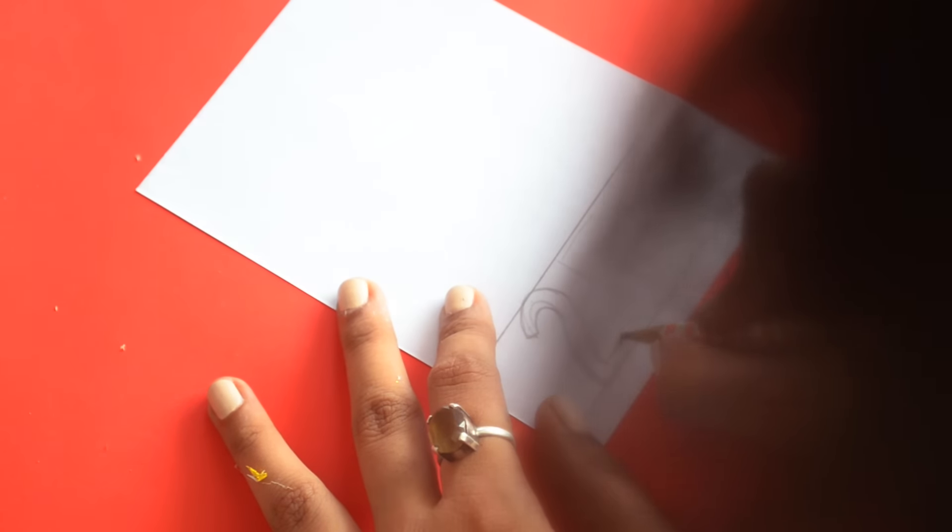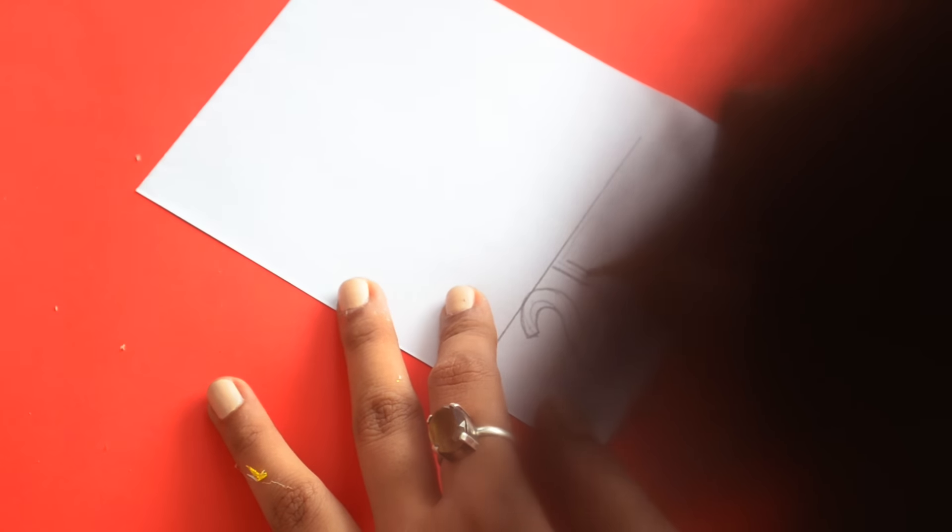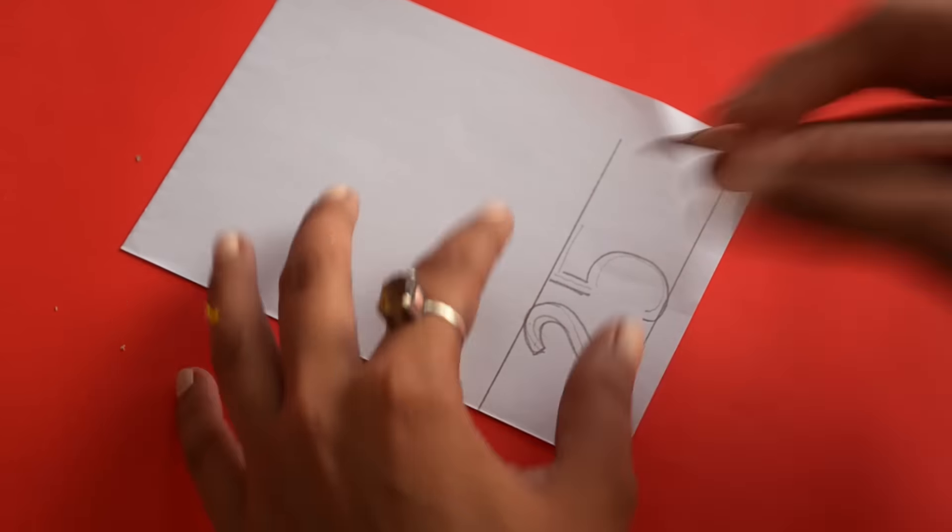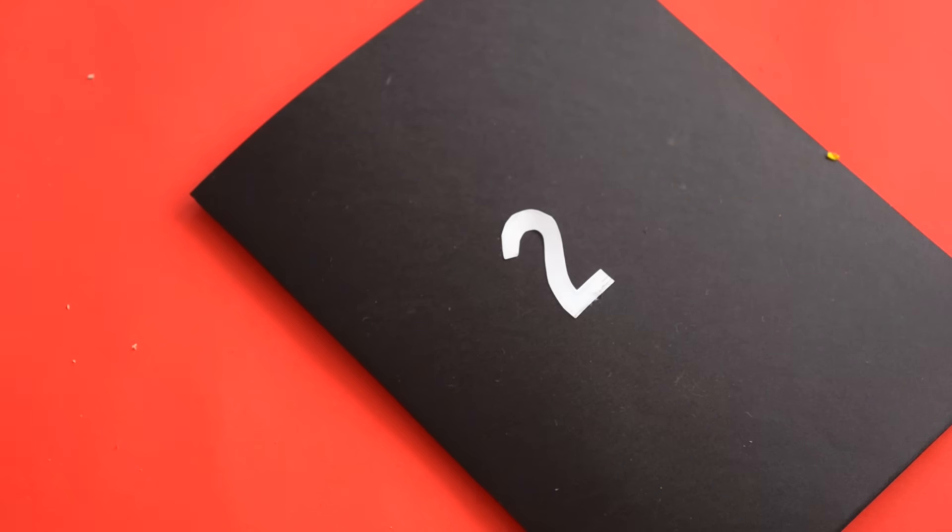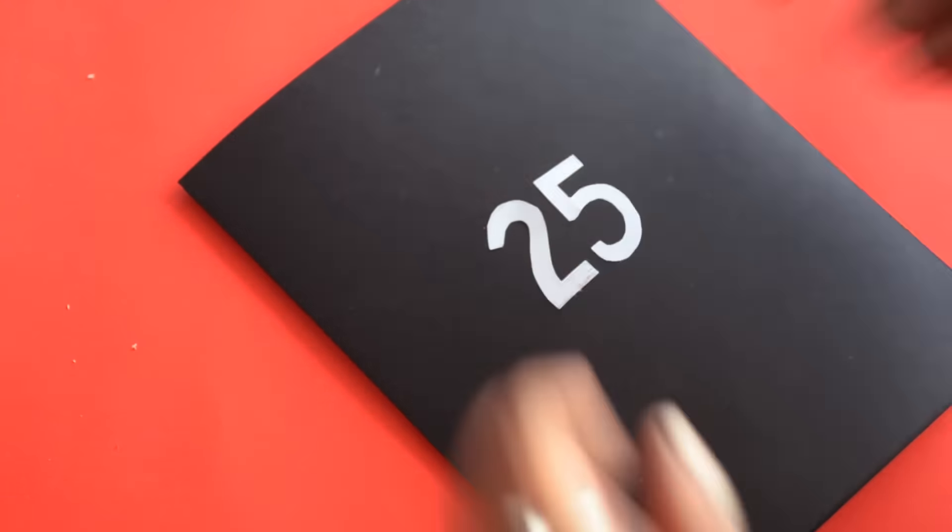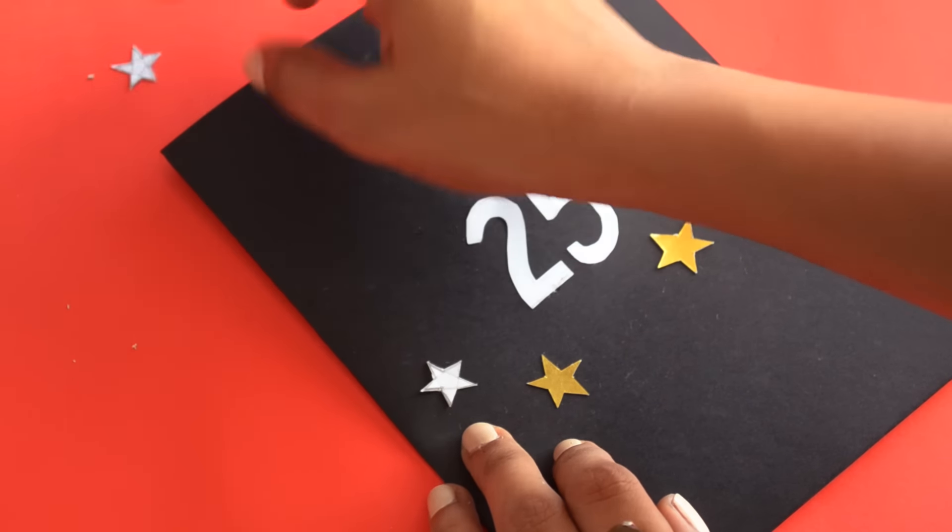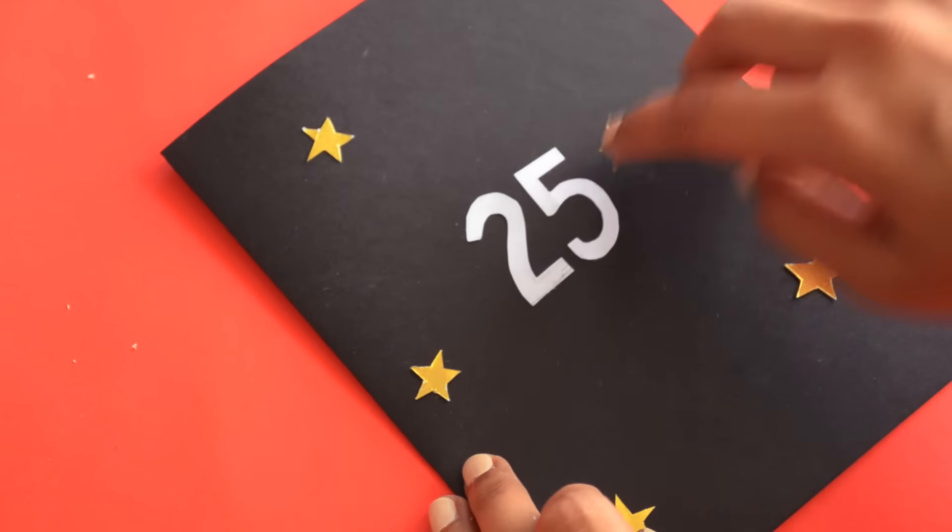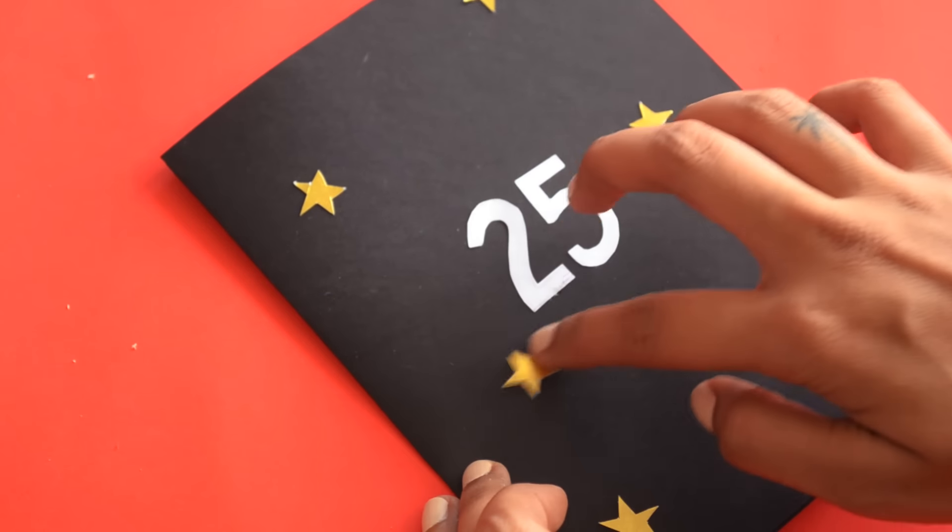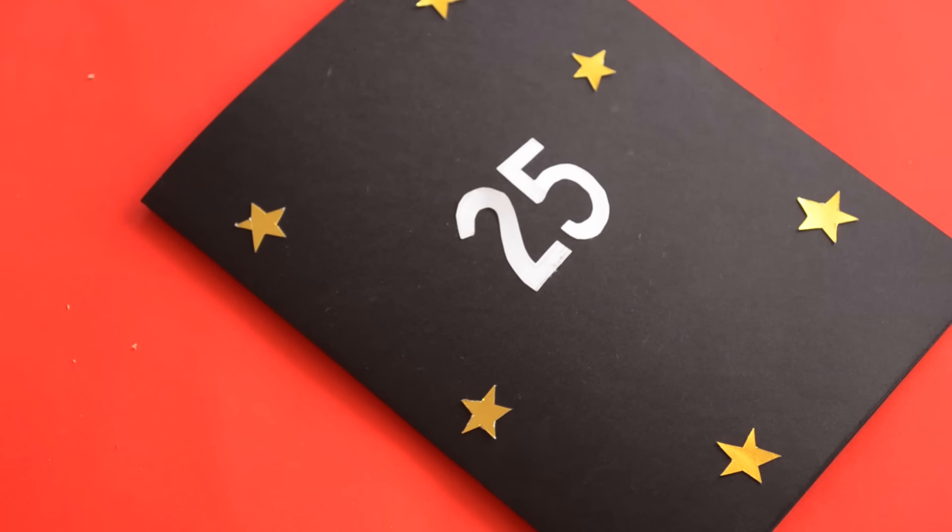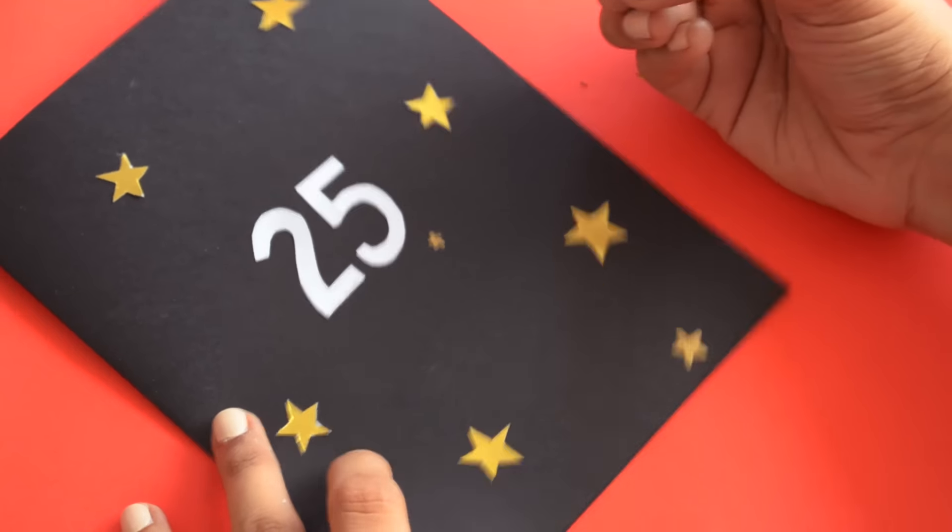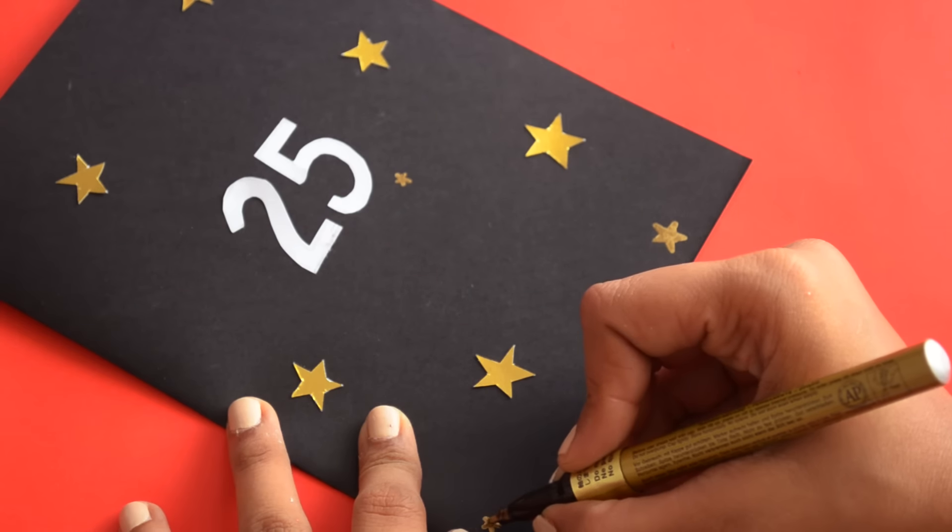For the fifth one, I cut out the numbers 2 and 5 and simply stuck them on black card paper. I also cut out some stars in gold. And in case it's difficult to cut out the stars, use a gold pen and that's pretty much it.